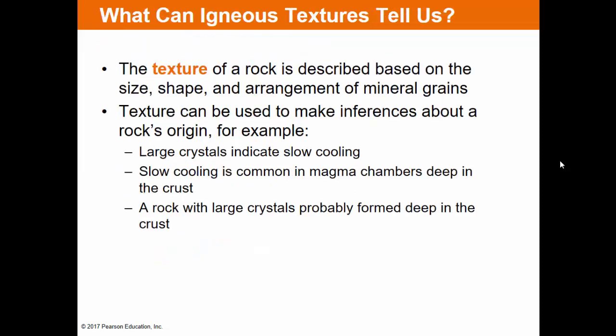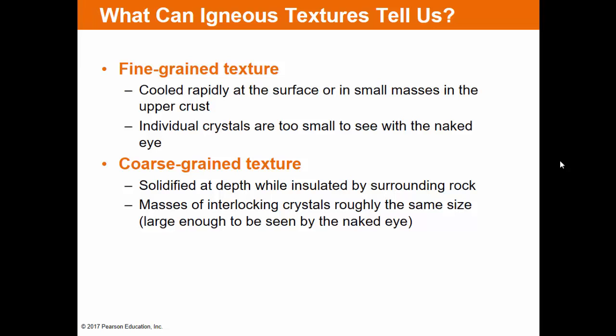There are two different types of igneous rocks based on where they cool. At the surface, crystallization is rapid and crystal texture is small. Beneath the surface, crystallization is slow and texture is large. The texture of a rock is described by the size, shape, and arrangement of mineral grains. Large crystals indicate slow cooling deep in the crust; fine grain indicates rapid cooling at the surface. Coarse grain texture means masses of interlocking crystals large enough to be seen with the naked eye, solidified at depth while insulated by surrounding rock.